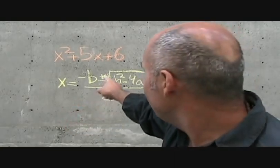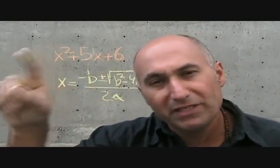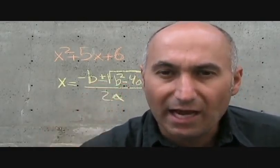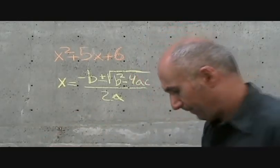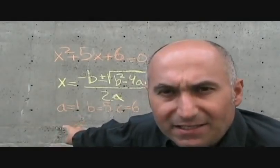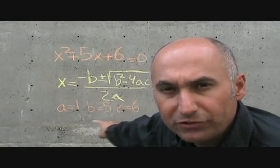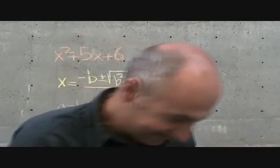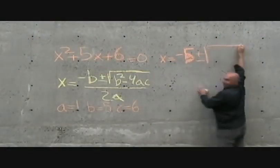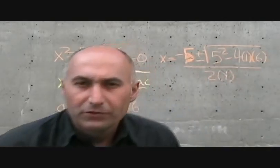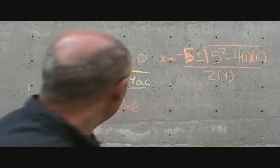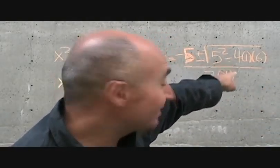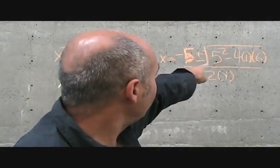A good tip to avoid confusion: whenever you identify a, b, and c, make sure the sign in front of the number always goes with the number. So we have a equals 1, b equals 5, and c equals 6. We plug those into the quadratic formula: x equals negative 5 plus or minus the square root of 5 squared minus 4 times 1 times 6, all divided by 2 times 1.